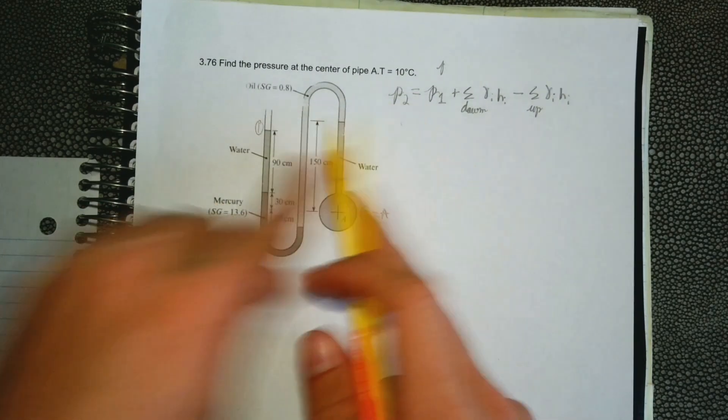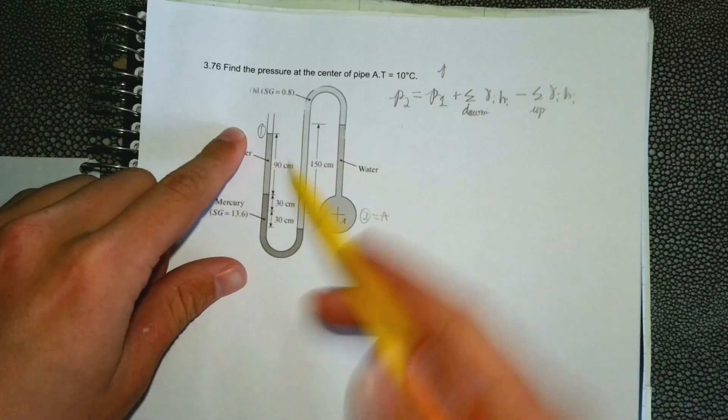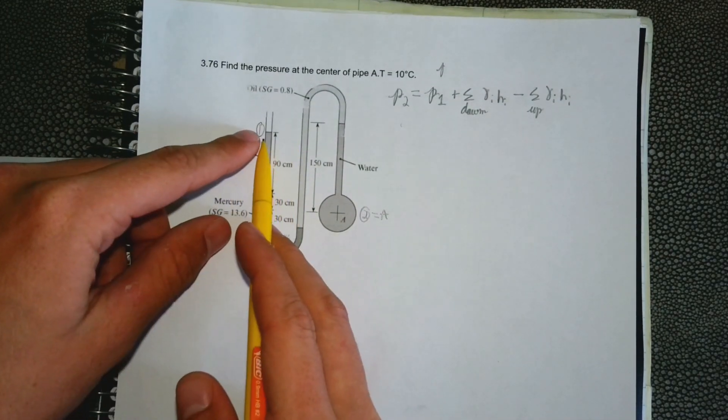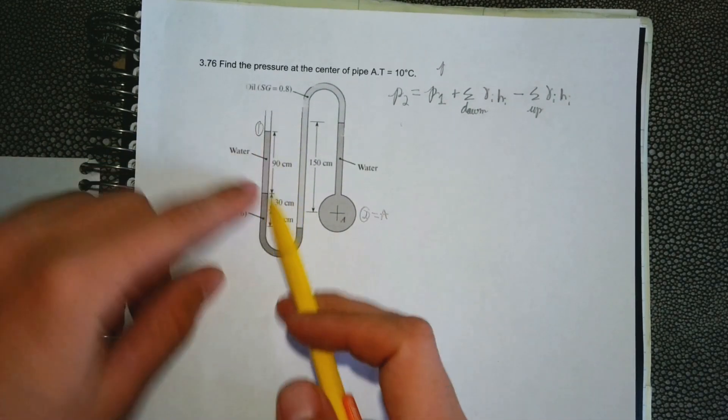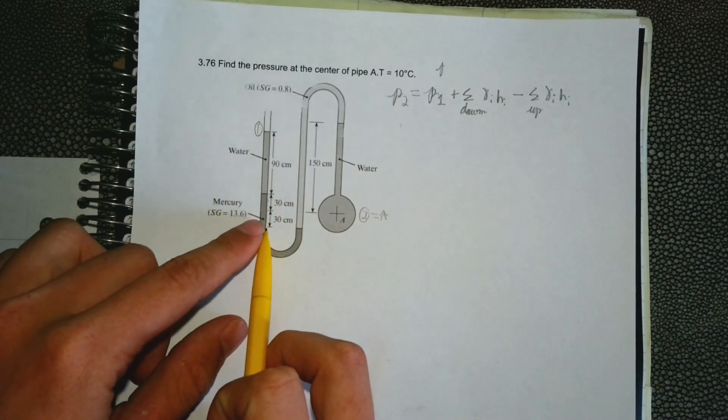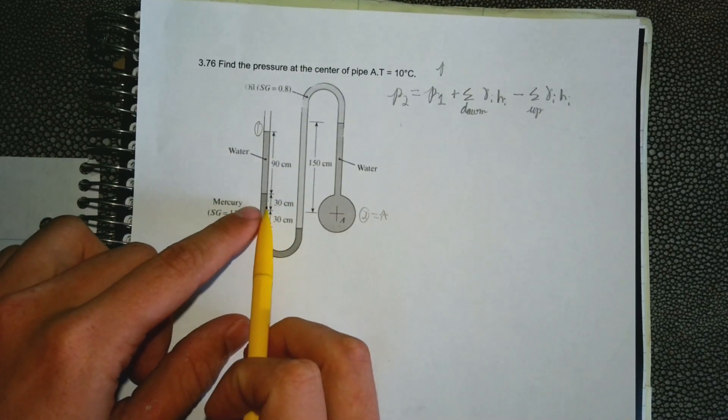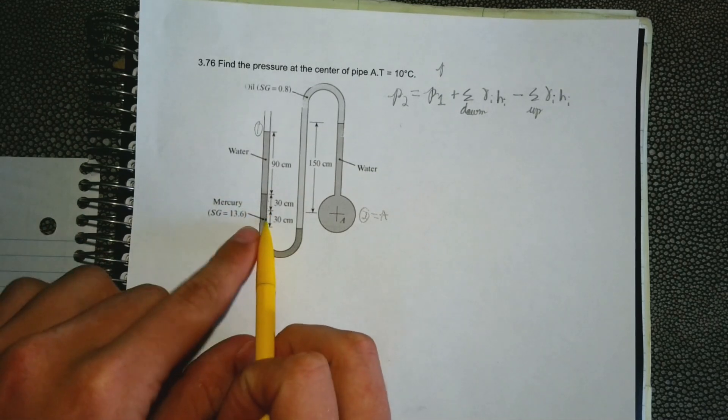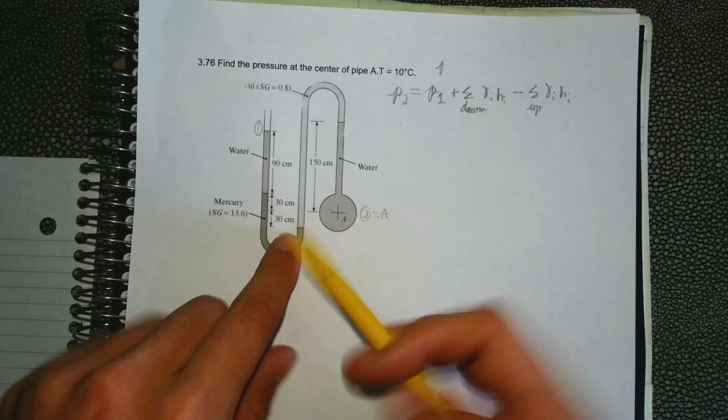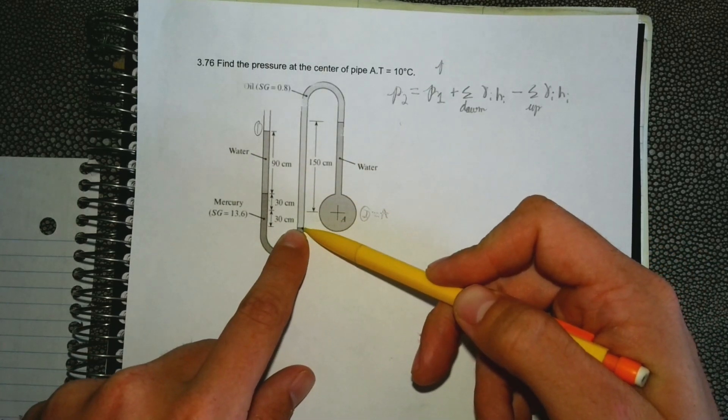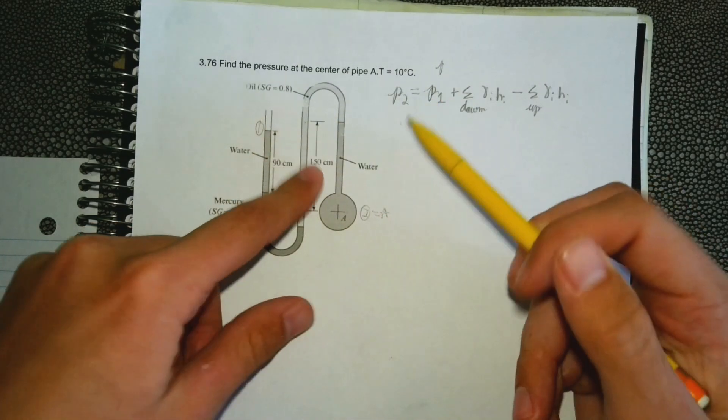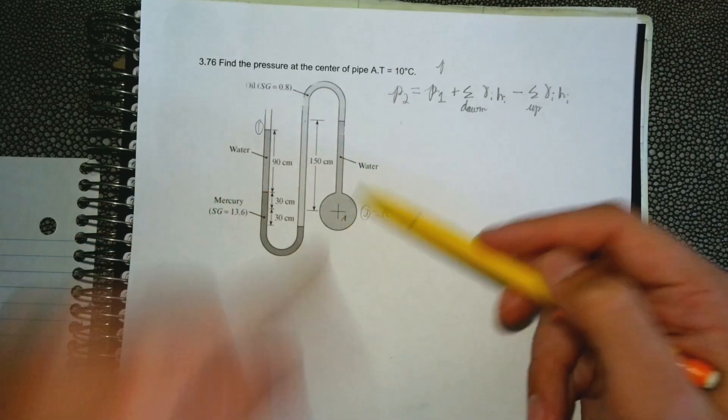If we start at pressure 1 and then do the specific weight, you add the specific weight times the height of this liquid, and then when you go down again you add the specific weight times the height of mercury. Then you subtract from this height to this height times the specific weight, and then you'll add it back down.